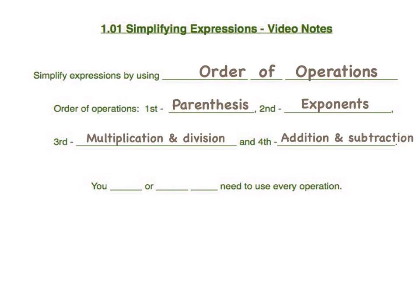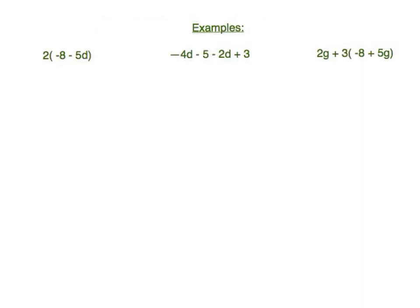Also understand that you may or may not need to use every operation. Now let's look at some examples. Our first example is 2 times negative 8 minus 5d. In our order of operations, we are first looking for parentheses, which we have, so we're going to distribute. That means we say 2 times negative 8 and 2 times negative 5d. So 2 times negative 8 is negative 16, and 2 times negative 5d is negative 10d.